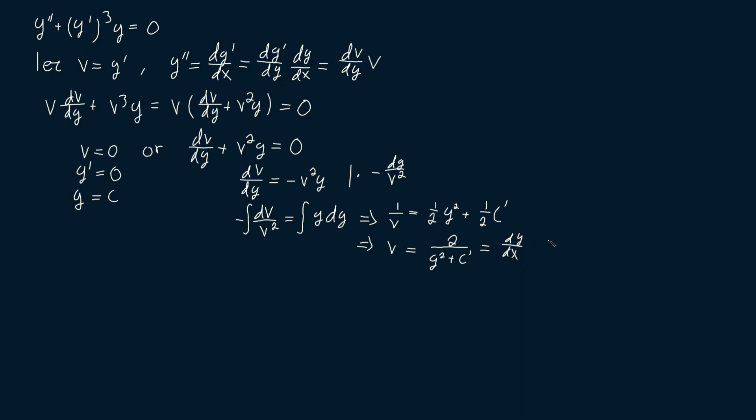We can solve this simply by first multiplying both sides by y squared plus c prime dx to get that two dx is equal to y squared plus c prime dy.